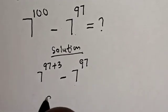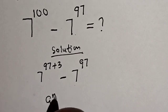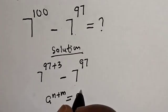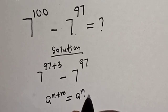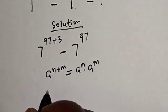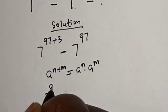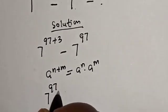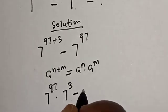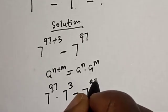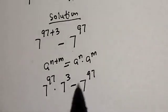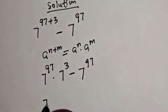Remember this rule: a raised to power n plus m is equal to a raised to power n multiplied by a raised to power m. Then this becomes 7 raised to power 97 multiplied by 7 raised to power 3, minus 7 raised to power 97.